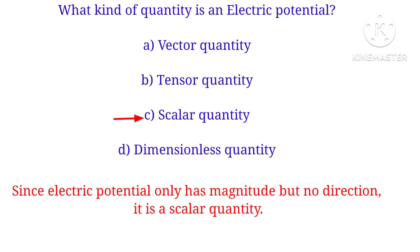What kind of quantity is electric potential? Electric potential is a scalar quantity, because the electric potential has only a magnitude and no direction. Hence, electric potential is a scalar quantity.